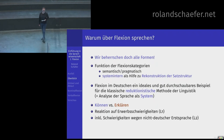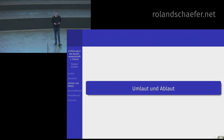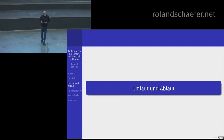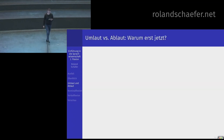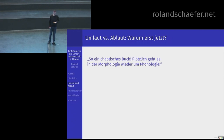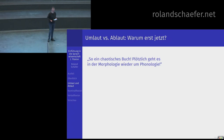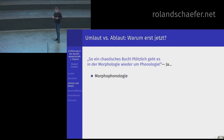Bevor ich Ihnen das erkläre, gehe ich jetzt auf Umlaut und Ablaut ein – wobei man bei Ablaut nochmal genau gucken muss, was da terminologisch richtig ist. Die Frage ist, warum kommt das erst jetzt? Es war mal eine Kritik an dem Buch, das wäre völlig chaotisch – plötzlich reden wir eigentlich über Morphologie und jetzt geht es wieder um Phonologie. Aber es gibt halt solche Teildisziplinen der Linguistik wie Morphophonologie.